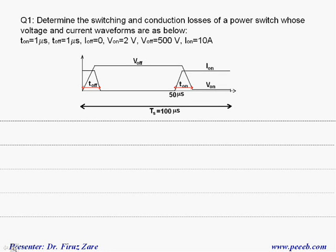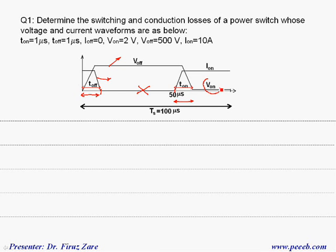In this example we have to find the conduction and switching losses. This is the voltage waveform and this is the current to the switch. When the switch is off, assuming the leakage current is zero, there is no conduction loss during the off time. This transient is the switch getting off, and this transient is the switch getting on. The voltage drop across the switch is V_on, which is 2 volts, and the current is 10 amps. When the switch is off, the voltage across the switch is 500 volts.